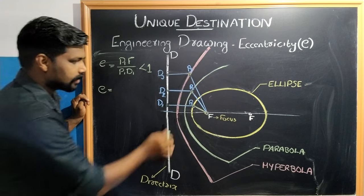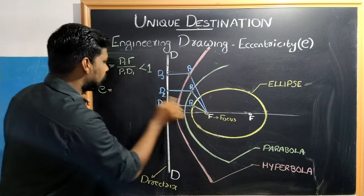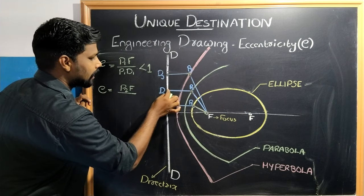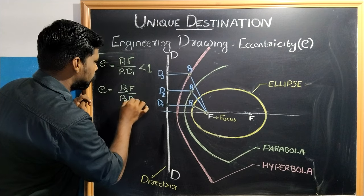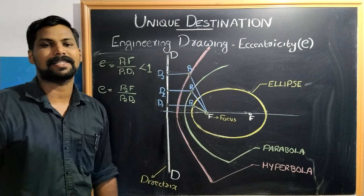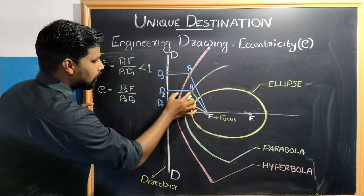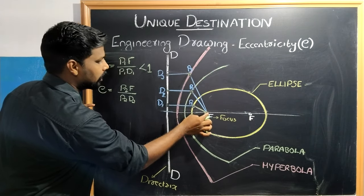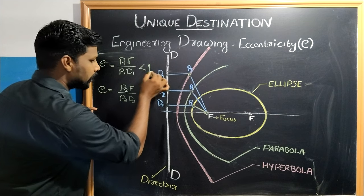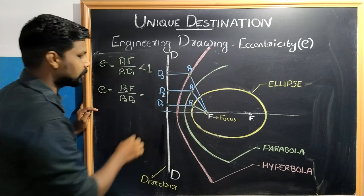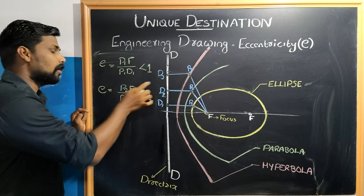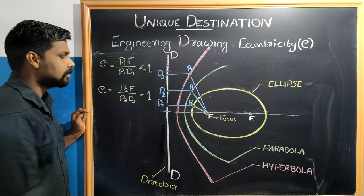In the case of a Parabola, the distance P2F and the distance P2D2 — these two ratios are the same eccentricity value. The ratio P2F to P2D2 is equal to 1. Therefore, the eccentricity of a parabola is always equal to 1.